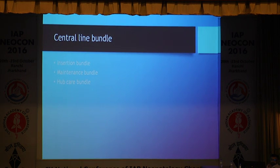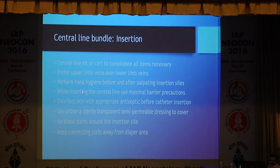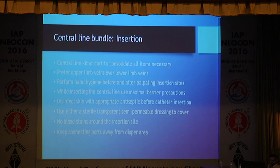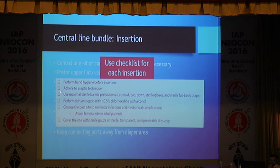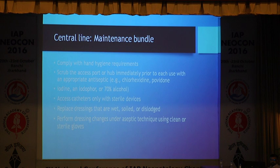The second important intervention is to implement central line bundles. Bundles are various interventions packaged and practiced together. For central lines there are three types: insertion bundles, maintenance bundles, and care bundles. For insertion bundles, there are six or seven simple steps: having a central line cart with all items, performing hand hygiene, inserting the central line with maximum barrier precautions, disinfecting skin, using a clear transparent dressing with no blood stains, and documenting appropriately. Even if one of these steps is missed, the patient has a higher chance of getting infected. A good idea is to have a simple checklist of these six steps so a nurse can tick which steps have been followed. Similar checklists are also available for maintenance of central lines.